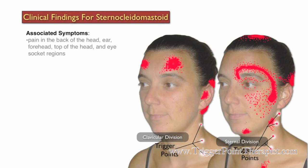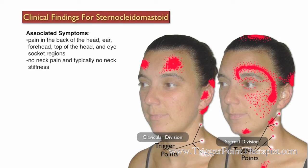Associated symptoms for the sternocleidomastoid trigger points: clients may complain of pain in the back of the head, ear, forehead, top of the head, and the eye socket regions. Although this muscle is located in the neck, there is typically no neck pain and no neck stiffness associated with SCM trigger points.